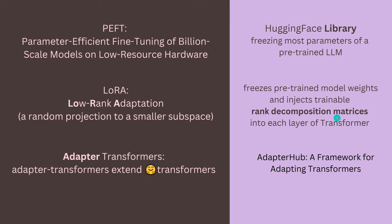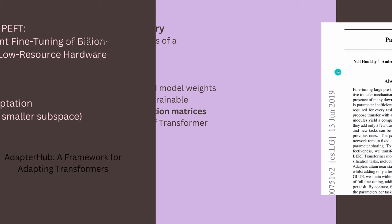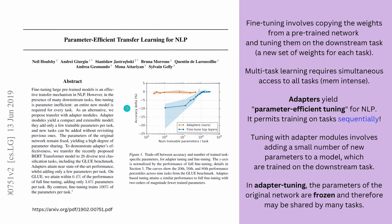LoRA takes those frozen pre-trained model weights and injects trainable matrices into each layer of the transformer. Since we have transformers in LLMs, in vision, in stable diffusion, in Whisper, in vision transformers, this method has a wide array of applications. Starting in June 2019, Houlsby published 'Parameter Efficient Transfer Learning for NLP,' saying fine-tuning involves copying weights from a pre-trained network and tuning them on a downstream task, producing a new set of weights for each task. Multi-task learning requires simultaneous access to many tasks and is very memory intensive.